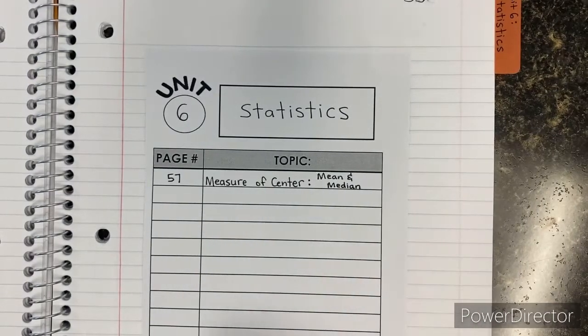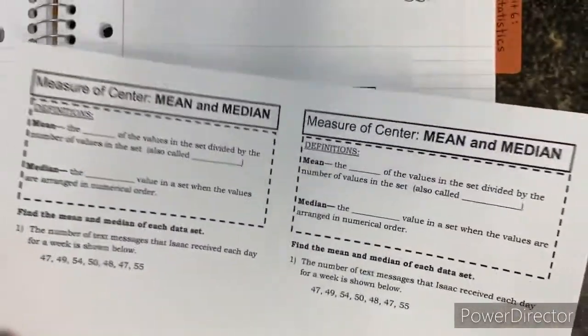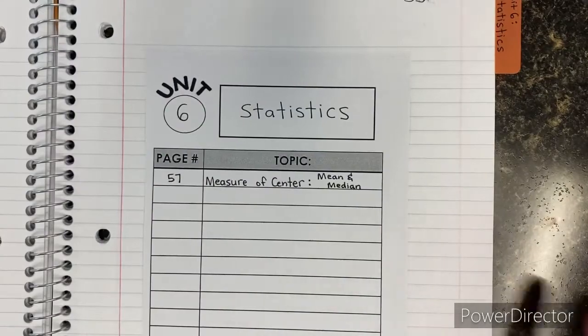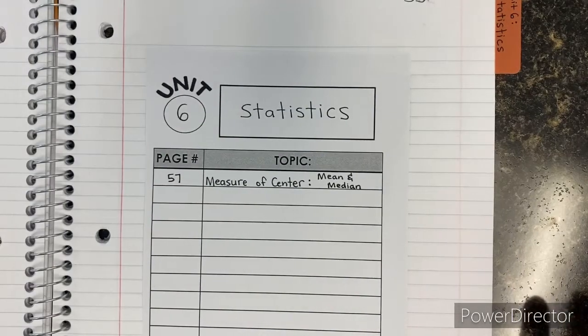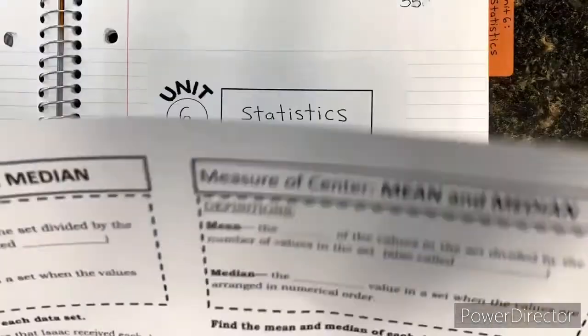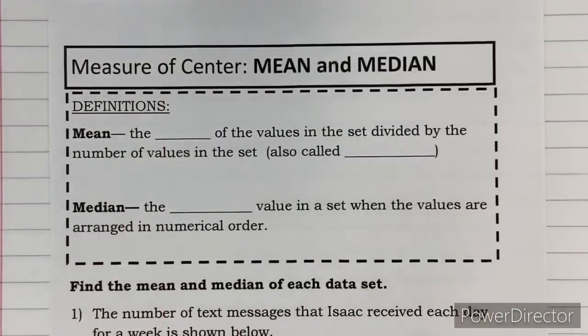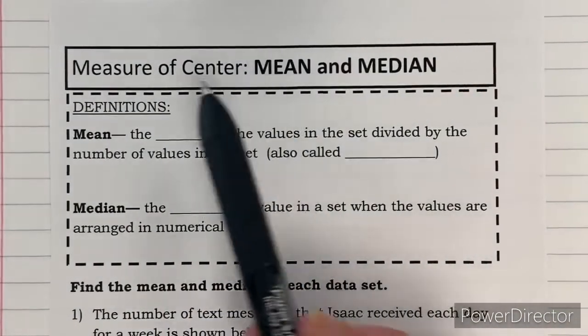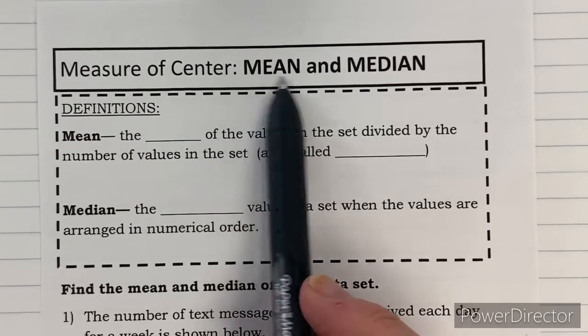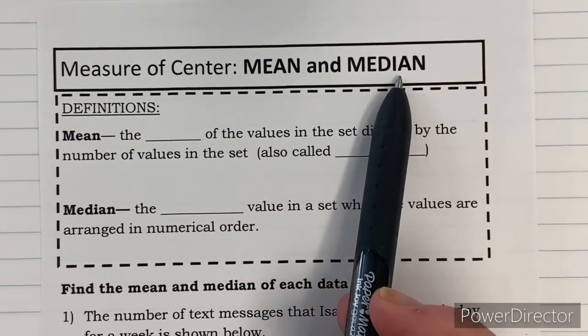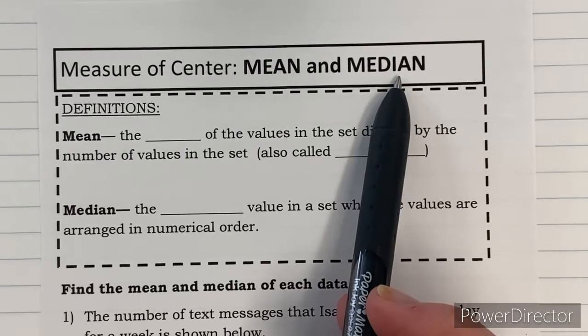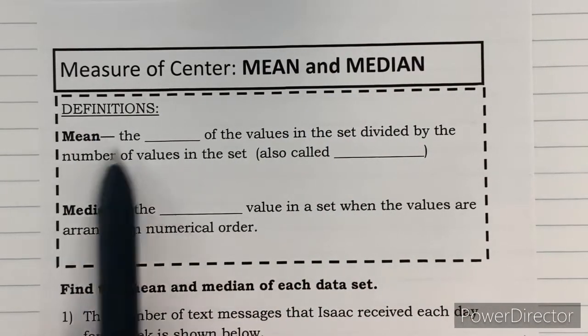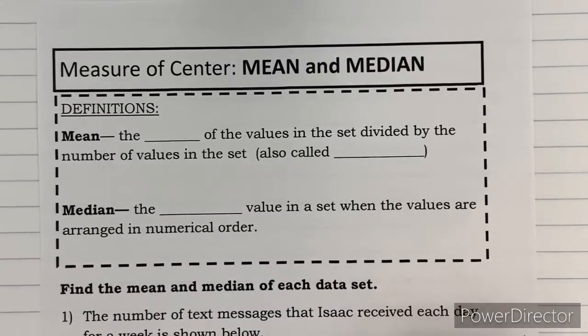Once you get that written down, this is what the notes look like. I'm going to cut it in half and tape it down on page 57. So I need you to go ahead and do the same for me. Now that we have those taped in, we're going to go ahead and start with our notes. There are a couple definitions that we need to get before we can actually do some practice problems.